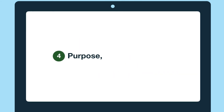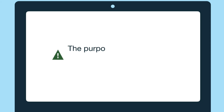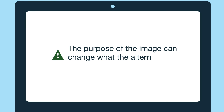The last tip is purpose, purpose, purpose. I say purpose three times because it's that important. The purpose of the image can change what the alternative text actually is, which we hinted at in our succinct example just now.